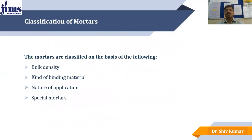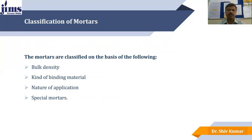Mortars are classified into the following four categories: based on their bulk density, kind of binding material, nature of application, and special kinds of mortar. These special mortars are prepared for a special kind of purpose.